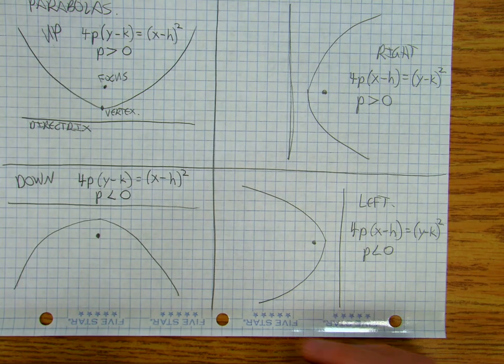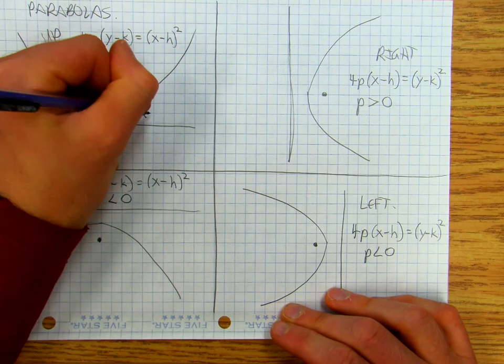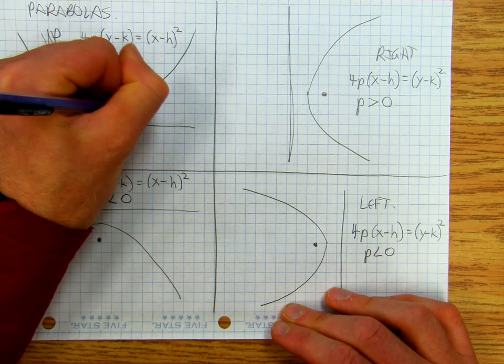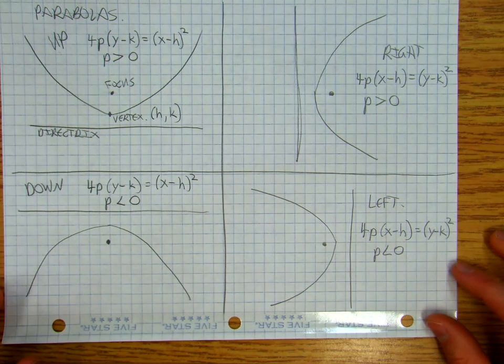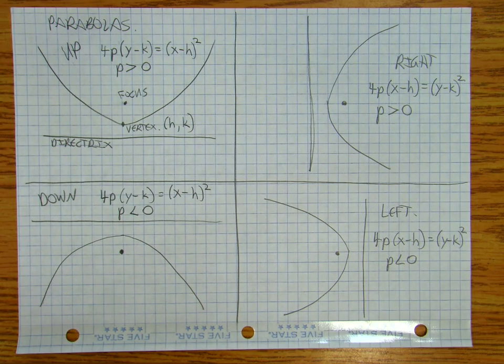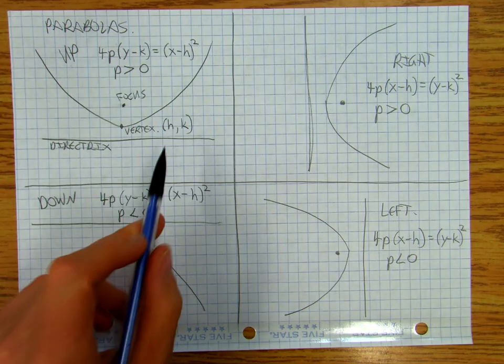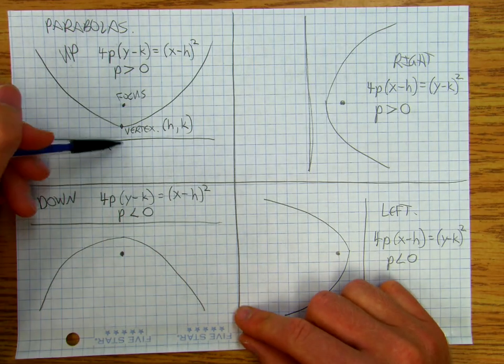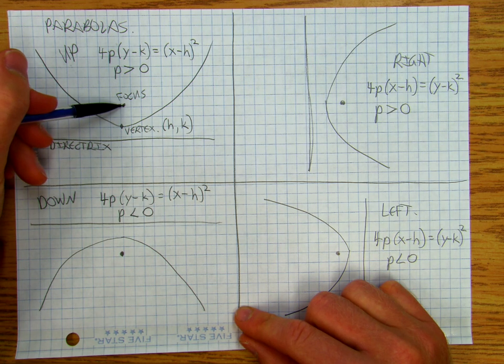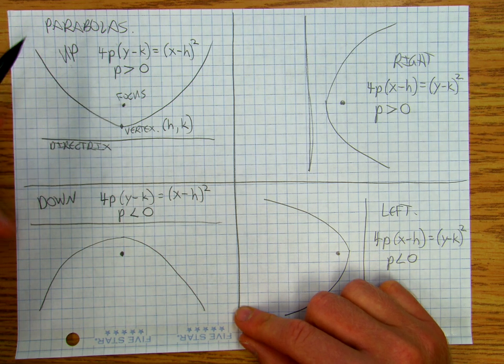So in all of these, on all of them, the vertex is at the point (h, k). And then if the focus is above the directrix, it opens up.